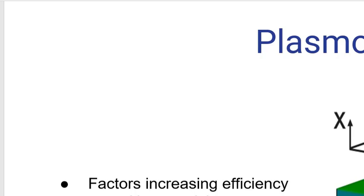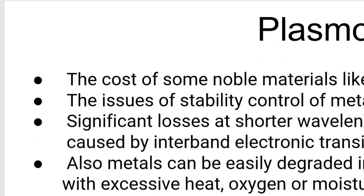Plasmonic limitation. There are several issues in plasmonic nanostructure technology. The first one is the high cost of some material like gold or silver because of scarcity. The second is nanostructure metal stability. It's very difficult to control the stability of nanostructure. The third, there are significant loss at short wavelengths in the visible and UV domain, caused by interband electronic transition of mirror. Also, mirror can be easily degraded in harsh manufacturing environment, such as the excessive heat, oxygen, and moisture.